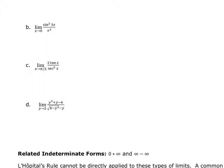As x approaches 2, when I put 2 in here, just to check to make sure I get to use L'Hopital's — I'm going to get 4 plus 2 minus 6, so this gives me 0. I put 2 in the denominator and I'm going to get the square root of 8 minus 4 minus 2, which also gives me 0. So L'Hopital's will work and I get to apply it here.